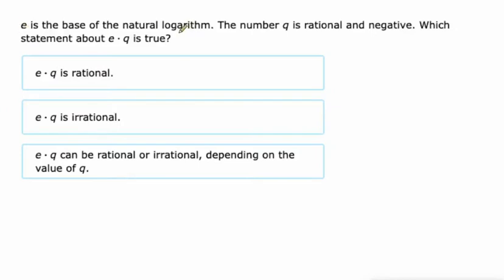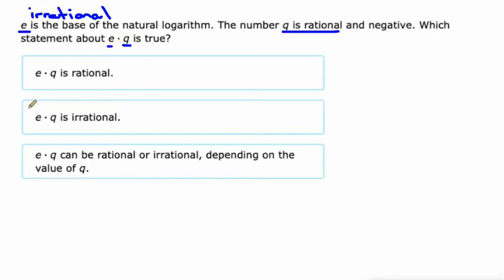E is the base of a natural logarithm. Let's just memorize that E by definition is irrational. So we've got an irrational number. Q is rational, we're being told. So we're doing irrational times rational — that's going to be irrational.